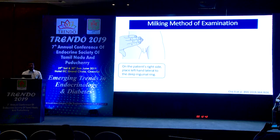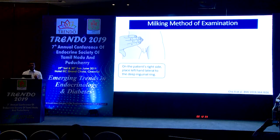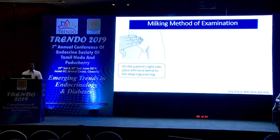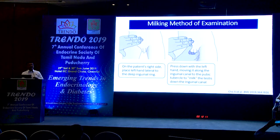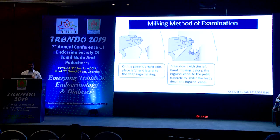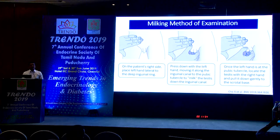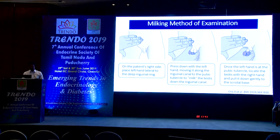The method of examination is very important — it is actually more sensitive than ultrasound when performed properly. For examining the right undescended testis, the examiner stands on the right side, places the left hand just lateral to the deep inguinal ring, and presses down along the inguinal canal to the pubic tubercle. The right hand then holds the testis and gently pulls it down to the base of the scrotum. This technique allows palpation of almost all undescended testes located in the inguinal region.